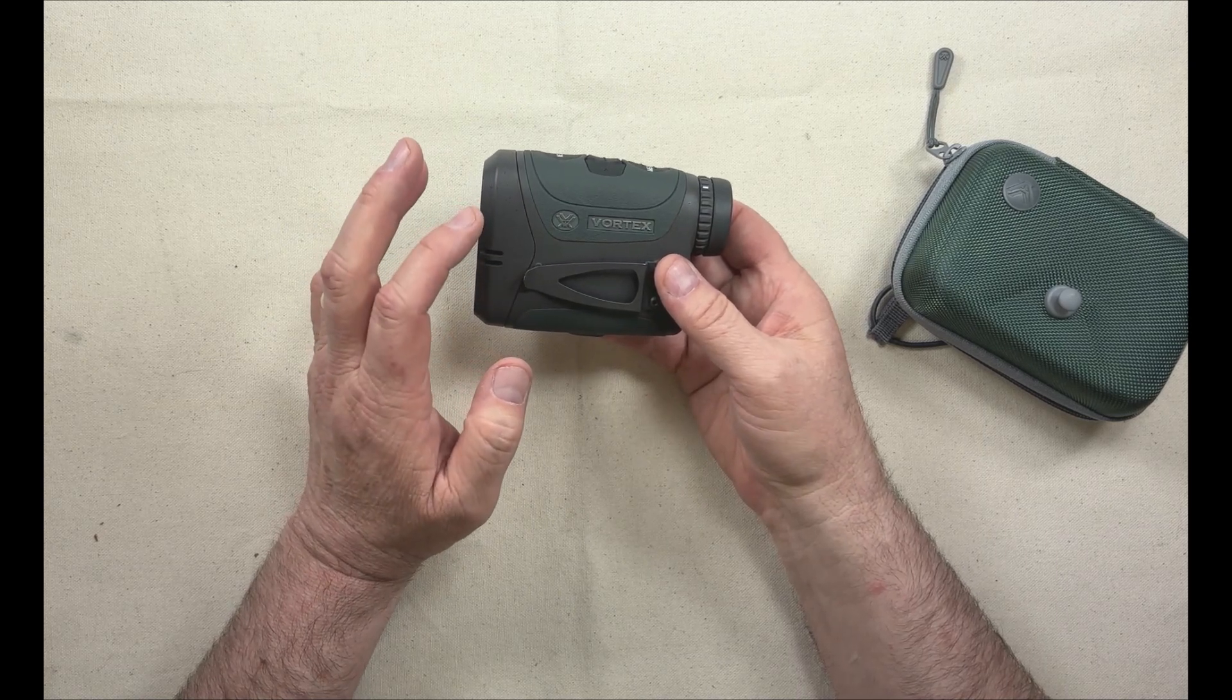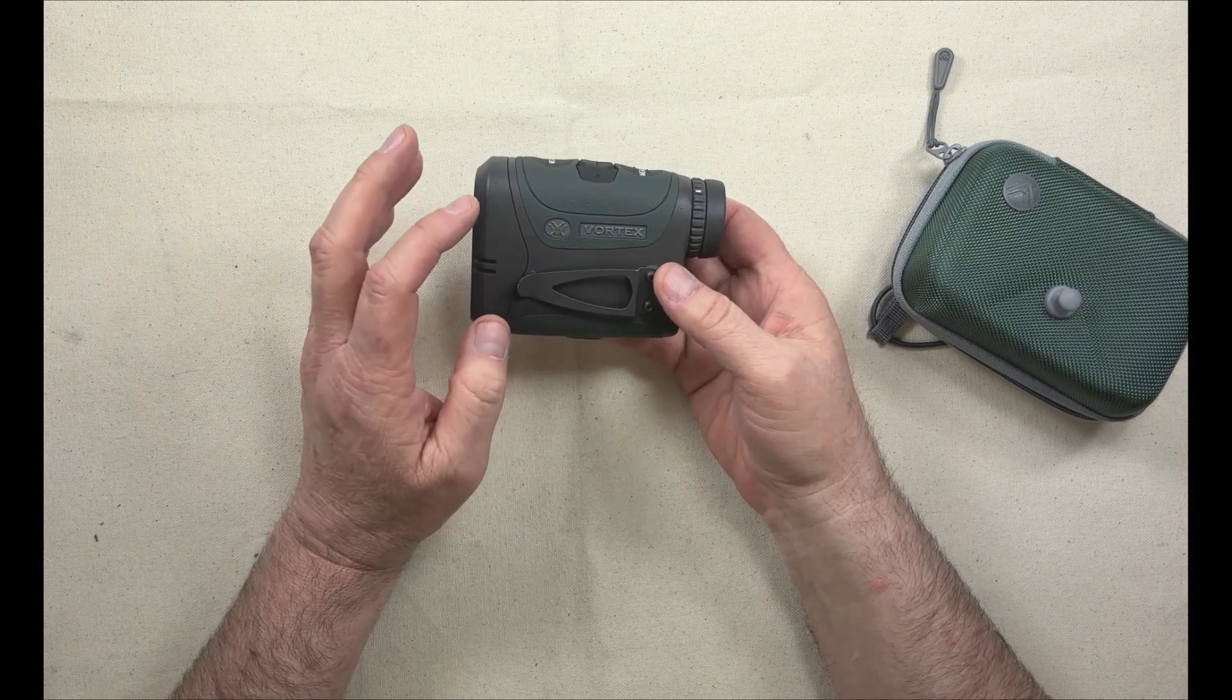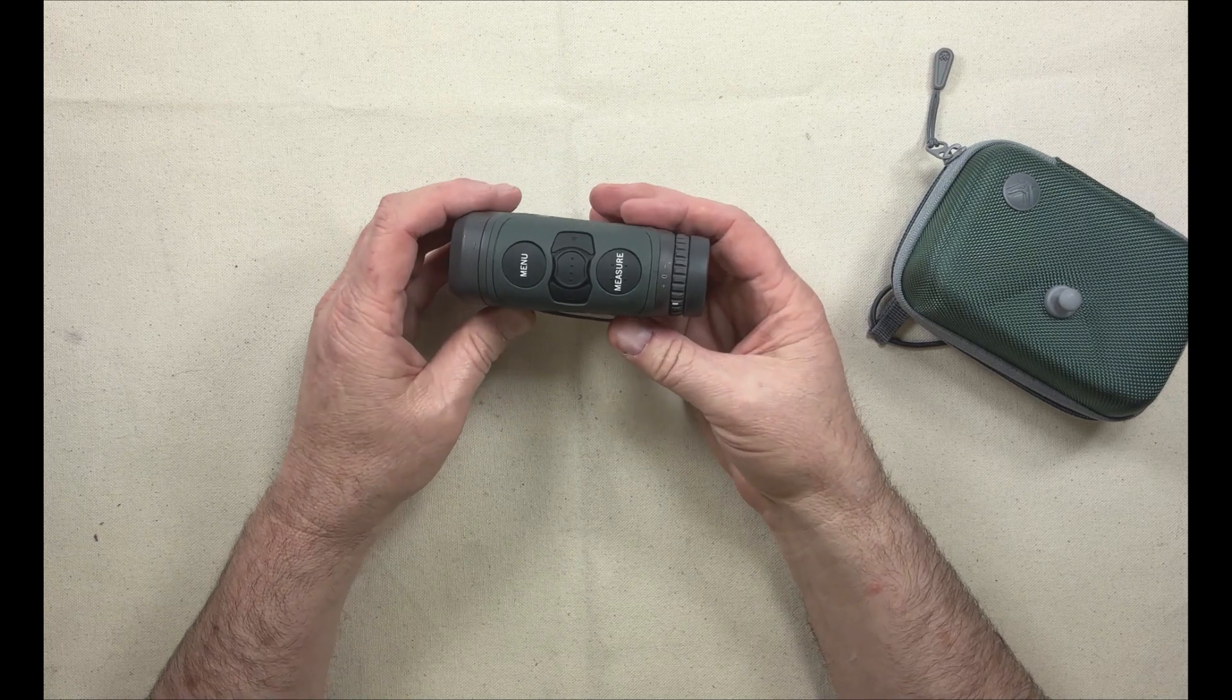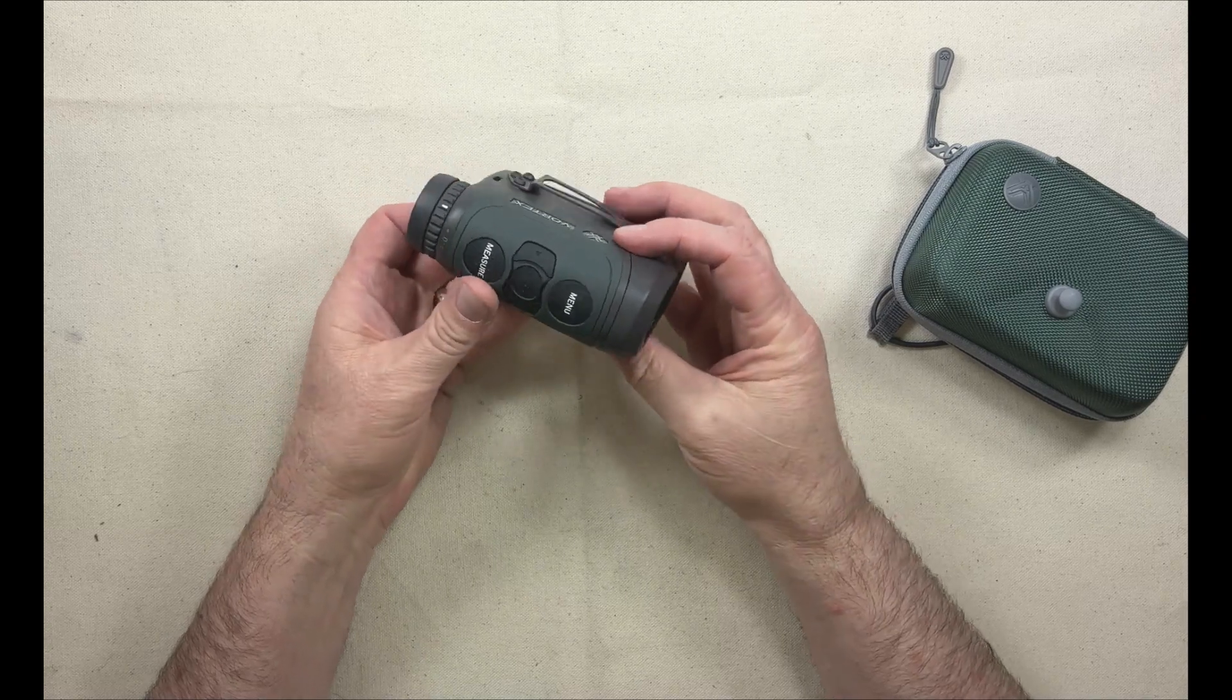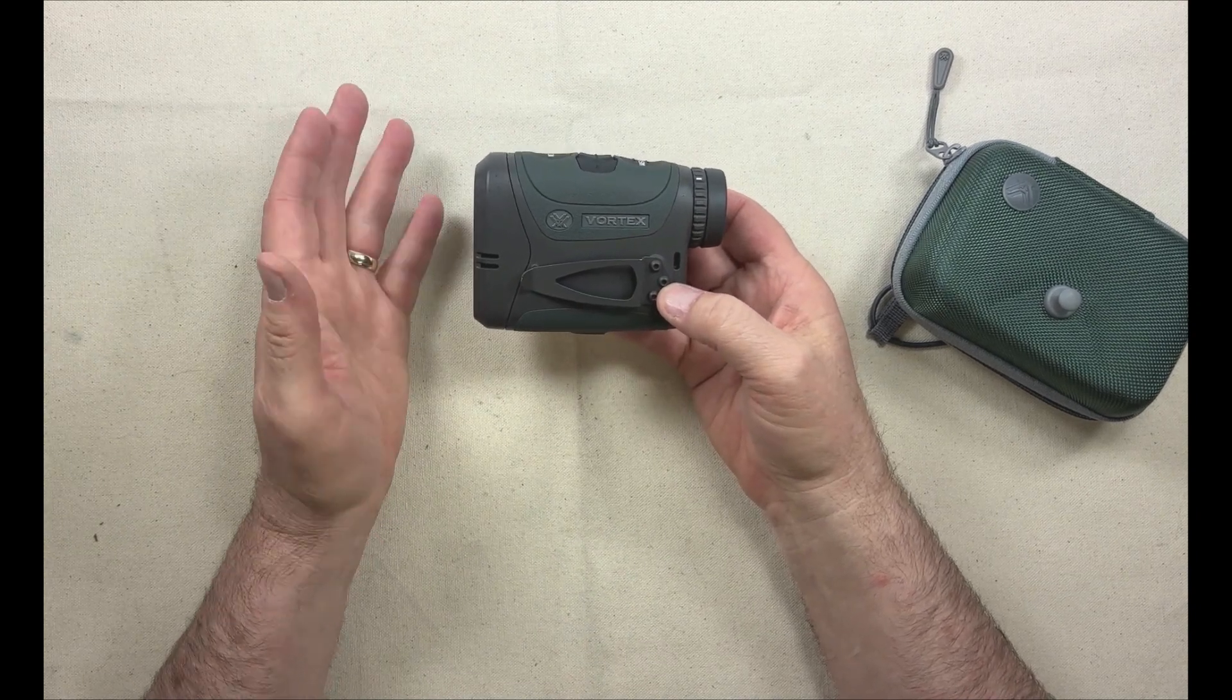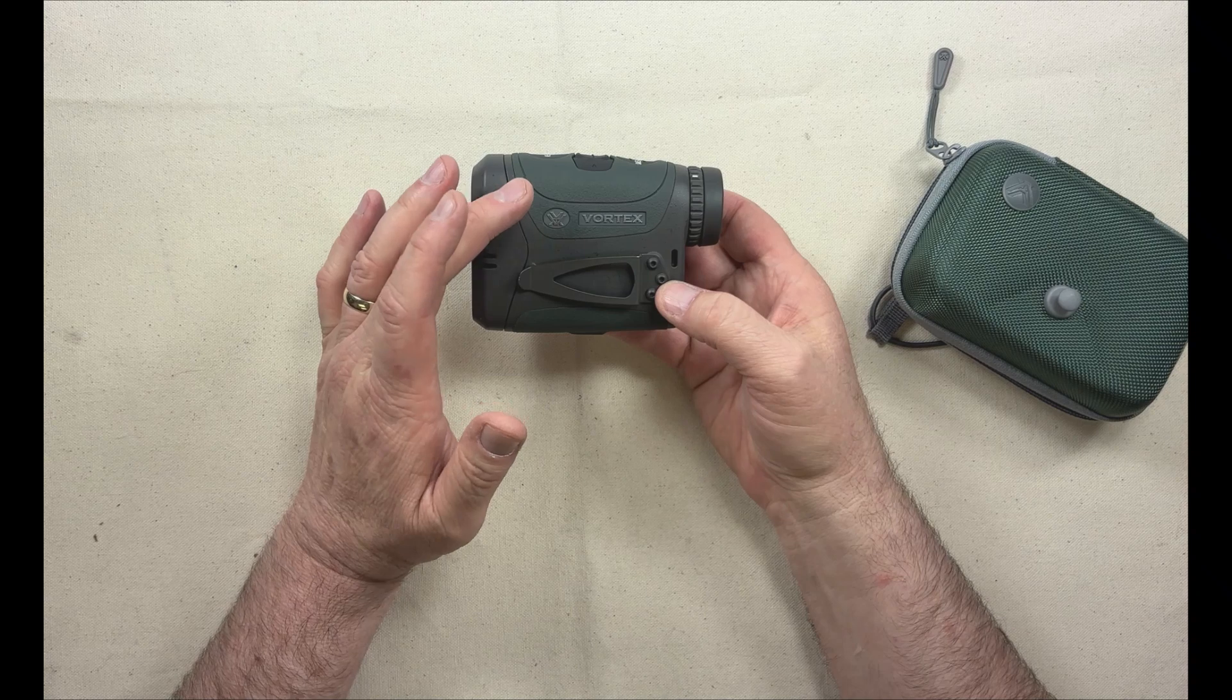The geoballistics has a free version that you download on your phone, and it will support one rifle profile. The paid version is going to be required if you're going to do multiple rifle profiles. Basically what a rifle profile is, is one rifle per profile. So if you have three rifles you want to use with this particular platform, you're going to need a plan with three profiles.